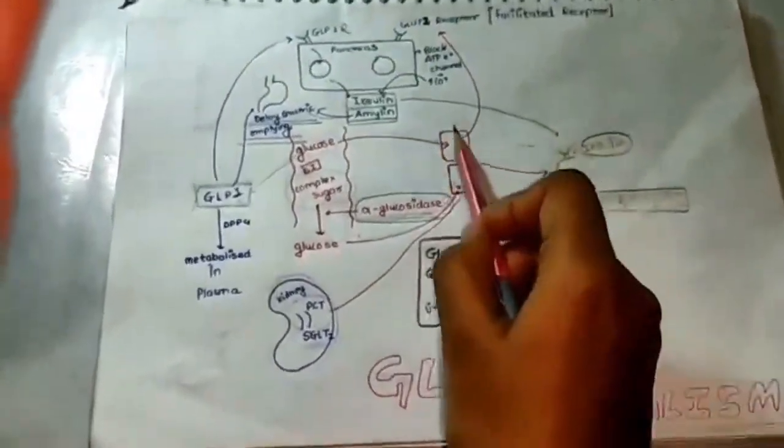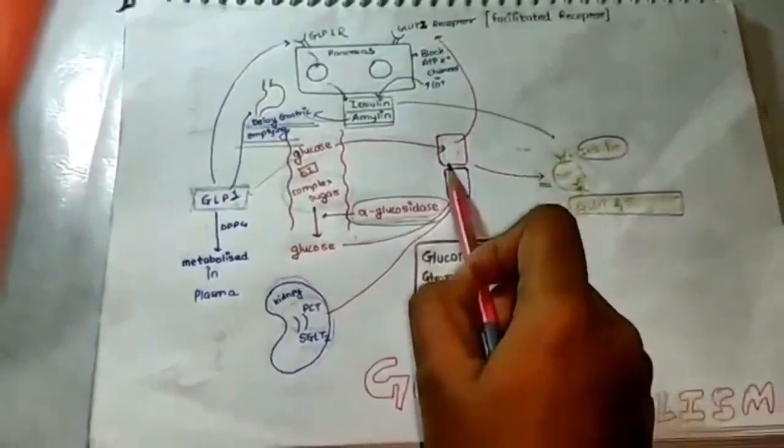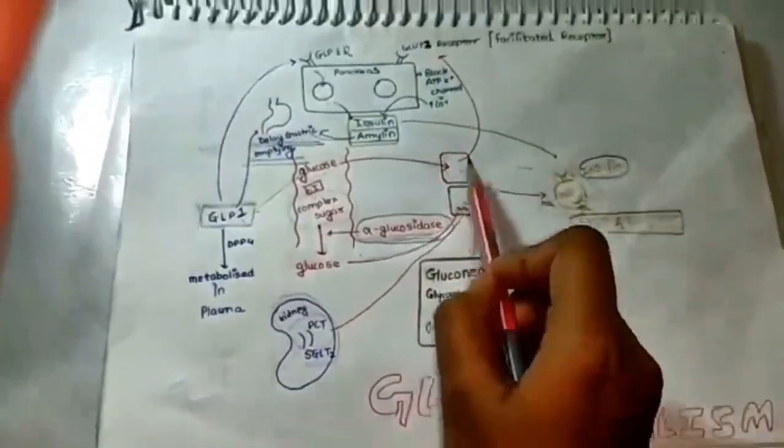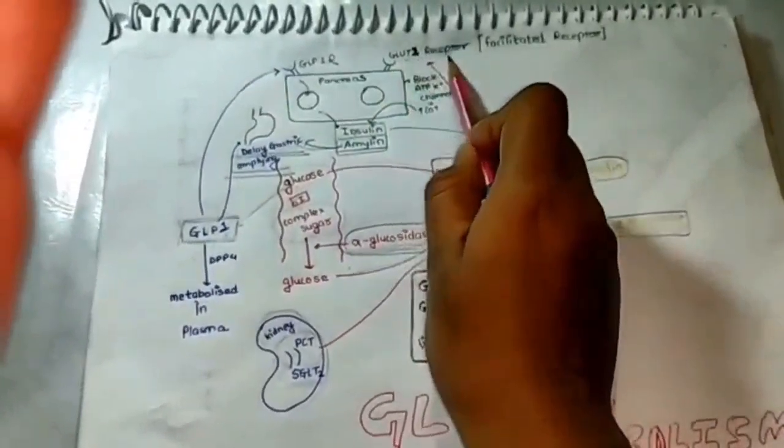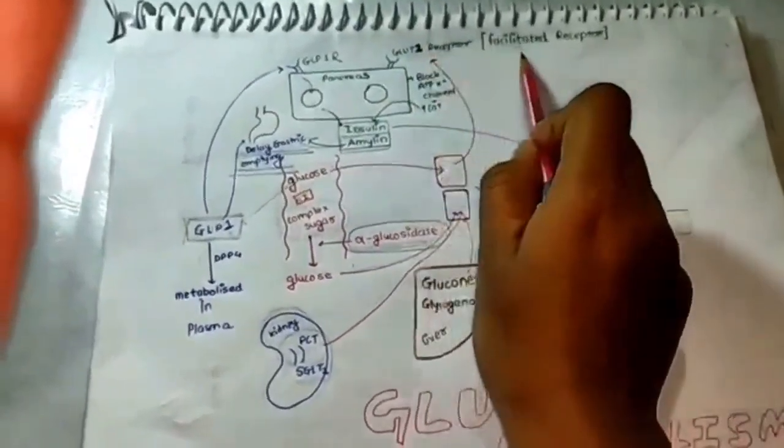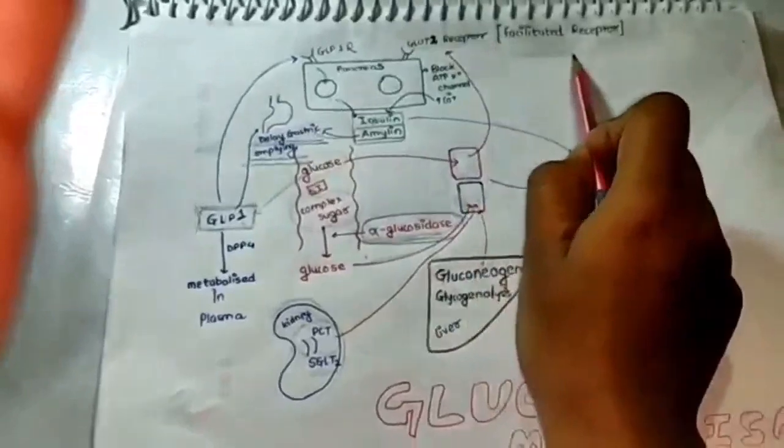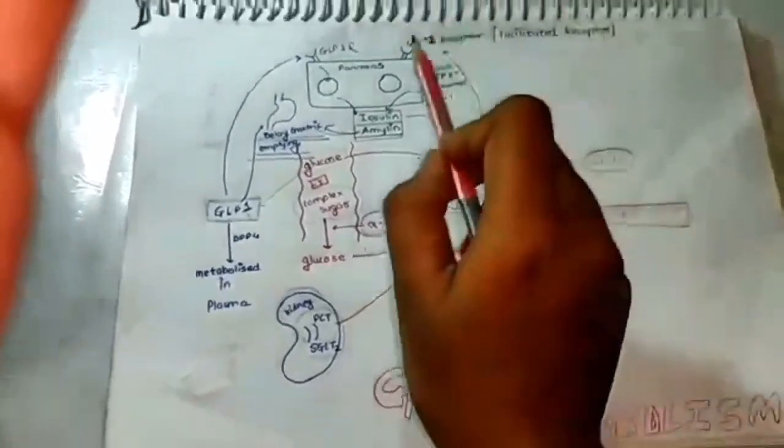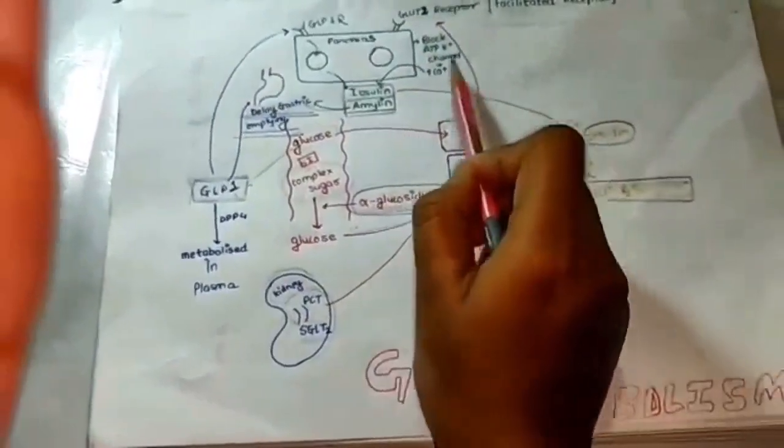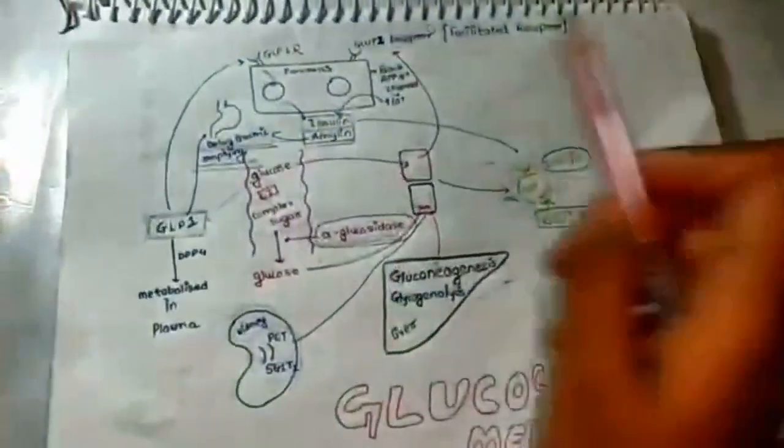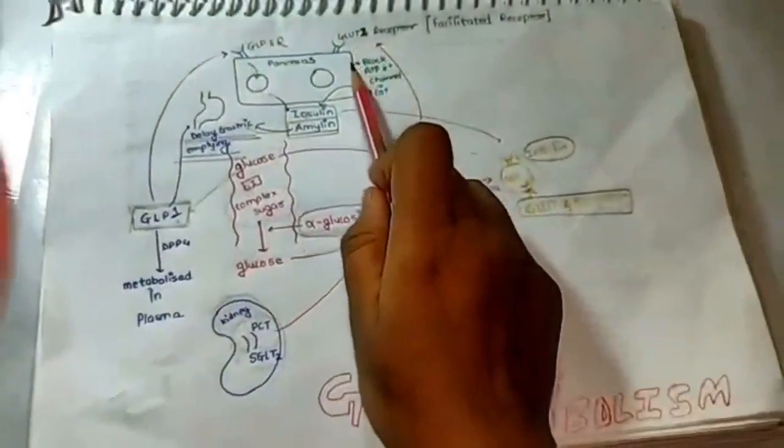Whatever excess glucose we have in our metabolic circulation goes to the beta cell with the help of another receptor called the GLUT2 receptor. This GLUT2 receptor is a facilitated receptor. What is meant by facilitated receptor? Whatever amount of glucose is present in excess in the plasma in comparison with beta cell, only that glucose will be taken up.